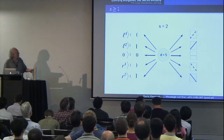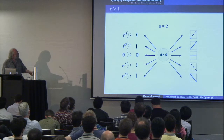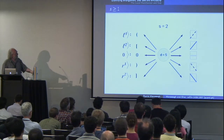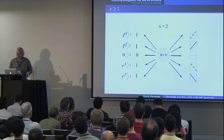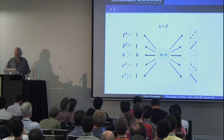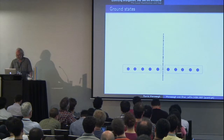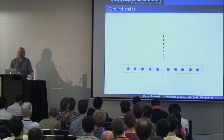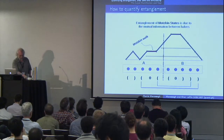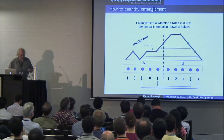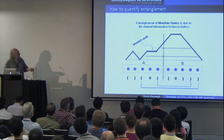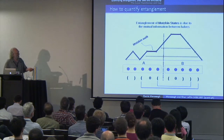For s equals 2, we have two different types of parentheses — two different colors of steps up and steps down — L1 and L2. The ground state will be the superposition of all Motzkin walks.